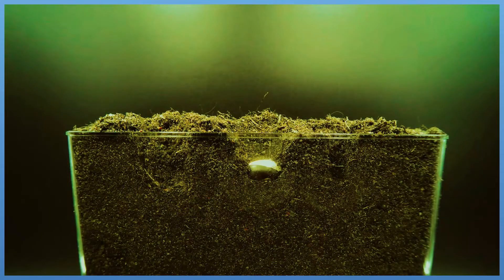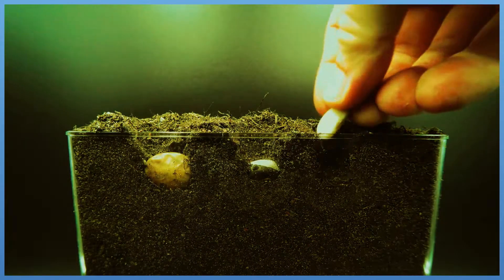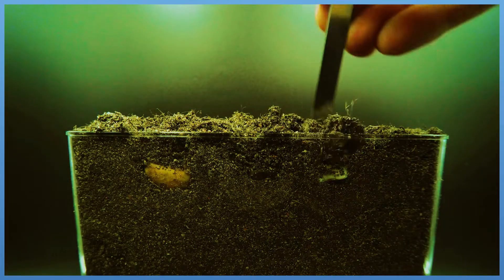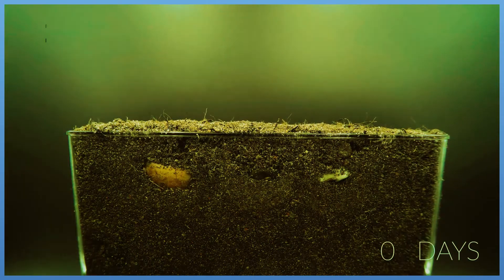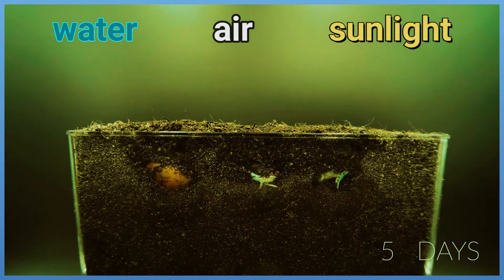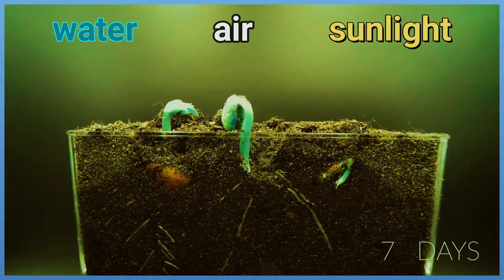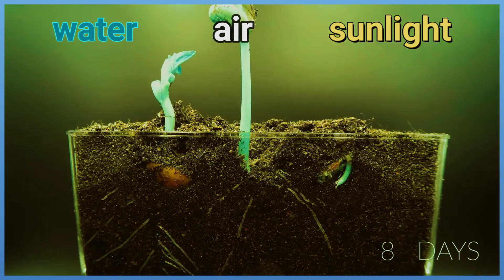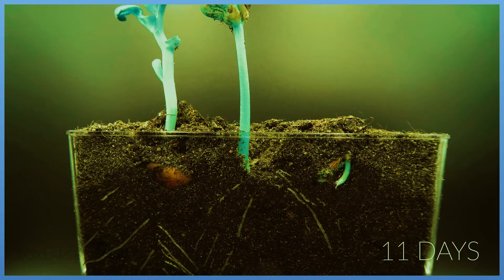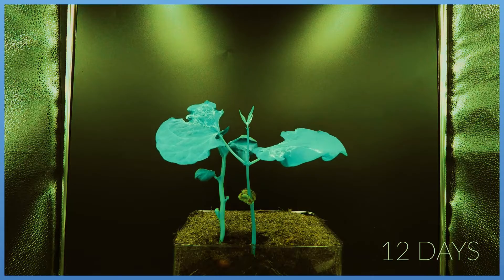We sow the seeds of plants in the ground, and we provide them with water, air, sunshine, and enough space to grow. Watch what will happen with the days. The seeds begin to grow in the soil and then the plants are released into the air.